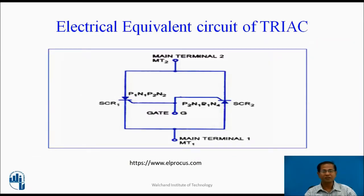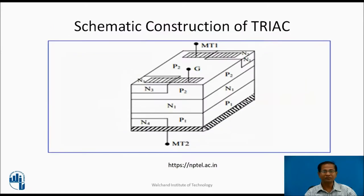This is the electrical equivalent circuit of Triac. When MT2 is positive and MT1 is negative, the current flows through P1, N1, P2, N2. When MT2 is negative, the current flows through P2, N1, P1, N4. This is the schematic construction of Triac — a three-terminal, five-layer device.